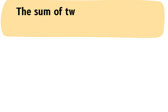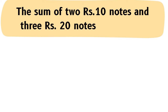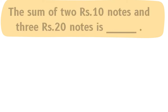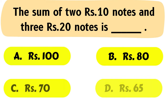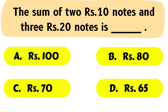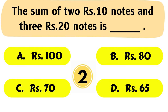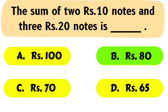Question No. 43: The sum of 2 Rs. 10 notes and 3 Rs. 20 notes is ___. The correct answer is Option B: Rs. 80.